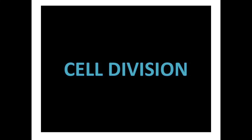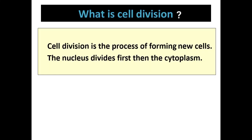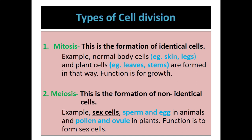Today's topic will be on cell division, and the lesson will focus on the two types of cell division. Cell division is the process of forming new cells — the nucleus divides first, then the cytoplasm. There are two types of cell division: number one, mitosis, and number two, meiosis.